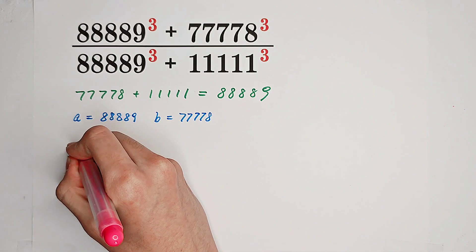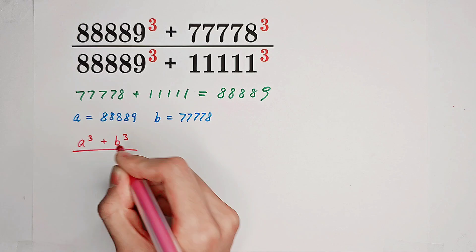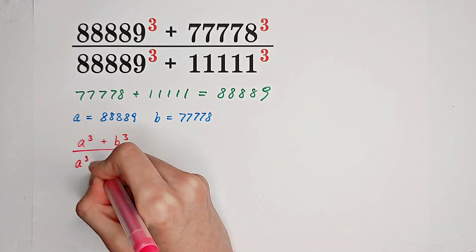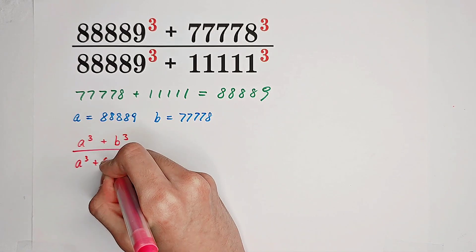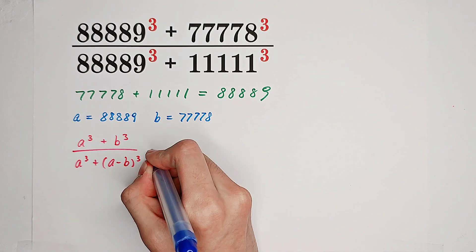So now what we have is A cubed plus B cubed over A cubed plus A minus B cubed. Now we can simplify this fraction.